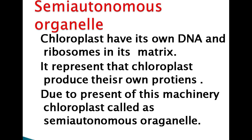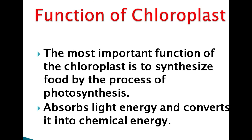Chloroplast has its own DNA and ribosome present in its matrix. This means chloroplasts can produce their own proteins due to the presence of this protein machinery. This is why chloroplast is also known as a semi-autonomous organelle.